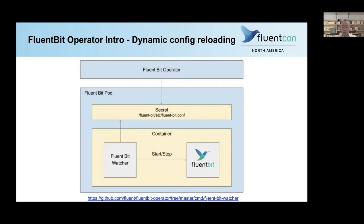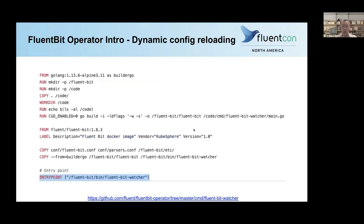Below is the link if you want to see how it's implemented — you can look at the code. Here is the Dockerfile. We compile the FluentBit watcher into a binary and use the official FluentBit image as the base image. We copy the latest configuration and the binary of FluentBit watcher into this base image and replace the original FluentBit entry point with the FluentBit watcher. So the FluentBit pod actually starts with the FluentBit watcher, which then starts FluentBit. This solves the dynamic config reloading problem.